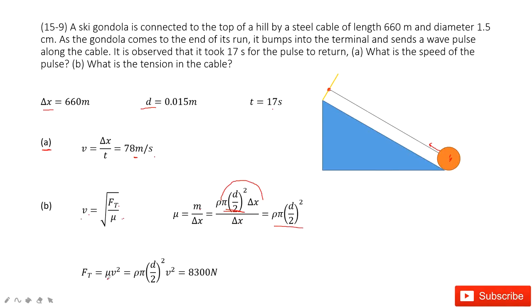And then in this question, we can find the function for ft equal to mu times v squared, and then input the mu inside. We get a function like this one, and then input all the known quantities, get the answer there.